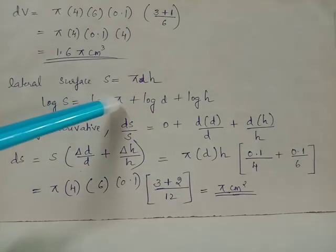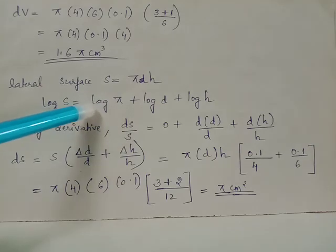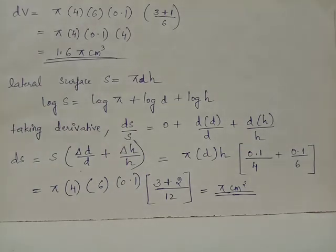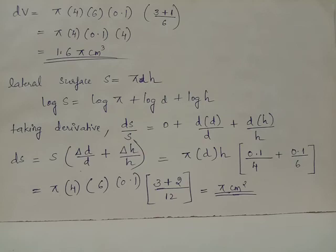This is because derivative of log π is 0 since it is a constant. Derivative of log S with respect to S is ds/S, and derivative of log d with respect to d is (1/d) × dd. Derivative of log h with respect to h is (1/h) × dh.